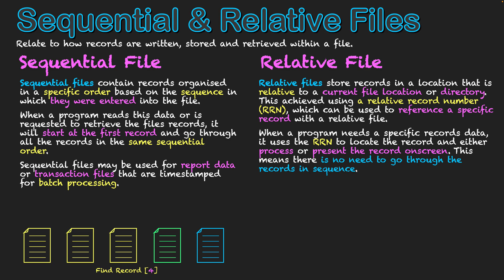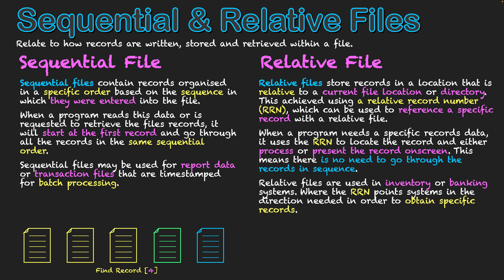Most systems would use this type of setup. Two key examples are inventory systems, where we need to find specific products within a database and present those records on screen, and banking systems, where there are lots of customers, accounts, and finances and we might need to look up specific customer details. We use that RRN to point us in the right direction so the system can present a specific user's data on screen.